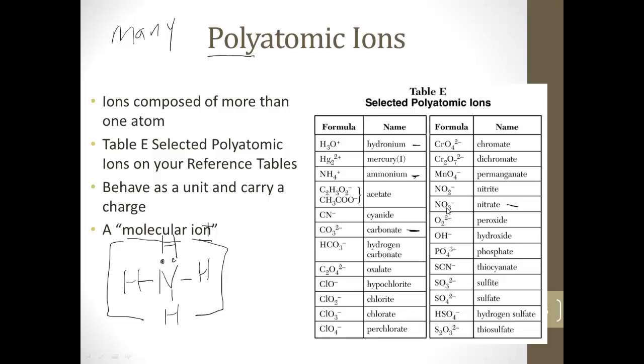Nitrate is NO3 minus. Nitrite is NO2 minus. The whole thing in both of them has a negative one charge, but the nitrate has three oxygens, while the nitrite has two oxygens.